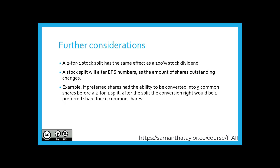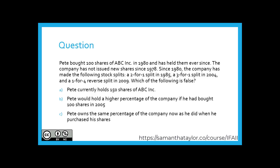Let's look at a question. Pete bought 100 shares of ABC Inc. in 1980 and has held onto them ever since. The company has not issued new shares since 1978. Since 1980, the company has made the following stock splits: a two-for-one split in 1985, a three-for-one split in 2004, and a one-for-four reverse split in 2009. Which of the following is false?